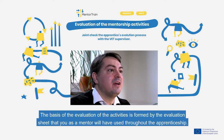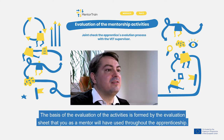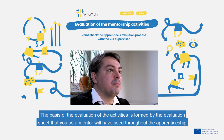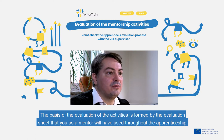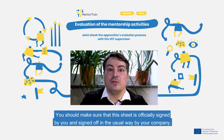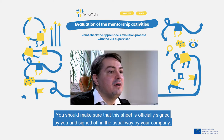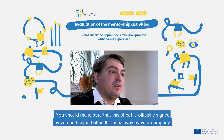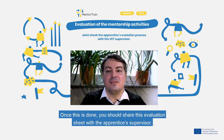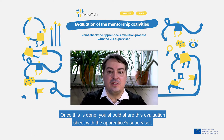The basis of the evaluation of the activities is formed by the evaluation sheet that you as a mentor will have used throughout your apprenticeship. You should make sure that the sheet is officially signed by you and signed off in the usual way by your company. Once this is done, you should share this evaluation sheet with the apprentice's supervisor.